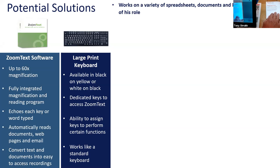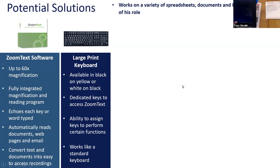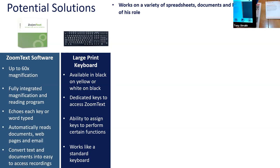Next is a large print keyboard. ZoomText manufacture their own — available in black with white enlarged keys, or yellow with black keys. It does what it says on the tin: a much larger, more enhanced keyboard that may help Adam within his role. It works as a standard keyboard — all keys and keystrokes are exactly the same as a standard QWERTY keyboard, nothing specialised beyond the enlarged print.